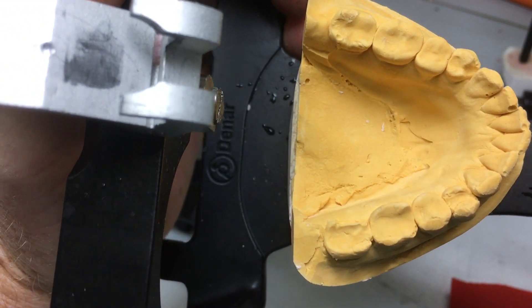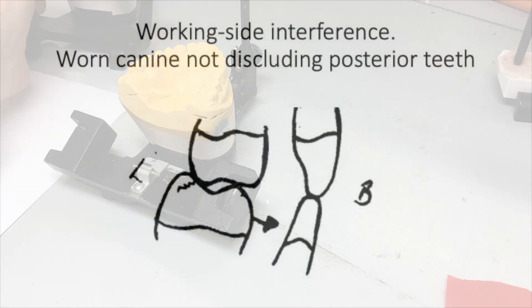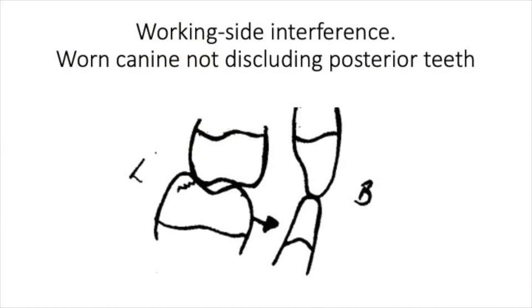The ways to restore canine guidance these days include composite - there's a sticker that comes with your book - or you could place a palatal veneer or a gold veneer to restore the guidance. More typically though, a direct composite restoration. That's about it for number three.